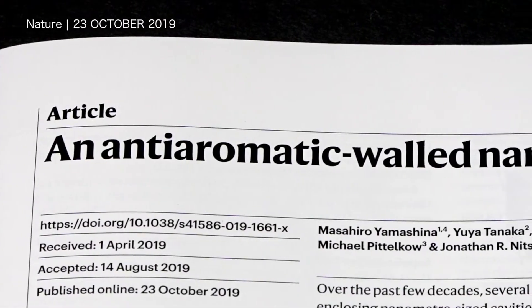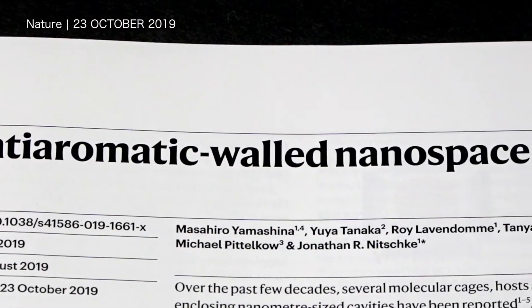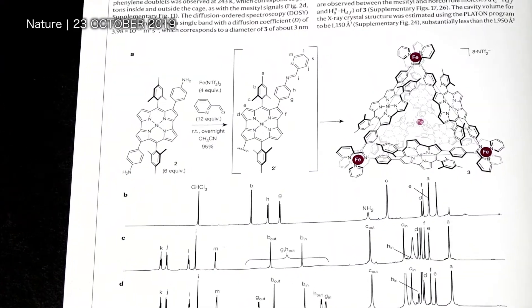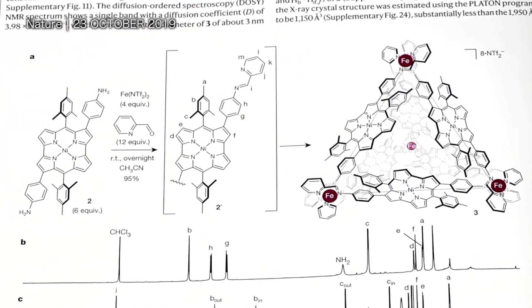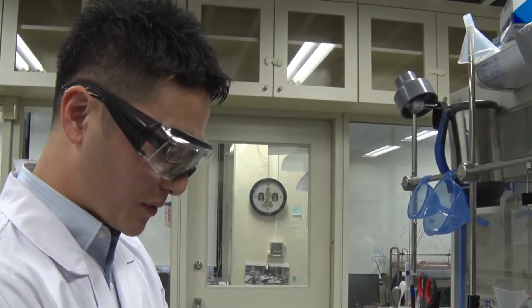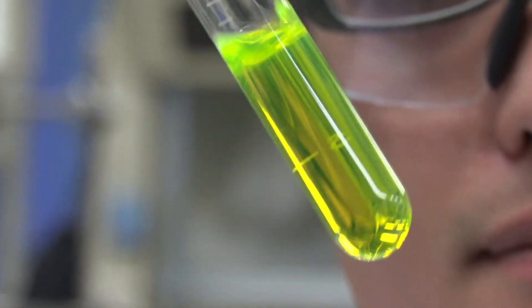Most recently, we developed an anti-aromatic supermolecule, a type of nanocage no one has ever built before. So far, many researchers have built supramolecules using aromatic walls. But it's much more difficult to do this using anti-aromatic walls, because they're so reactive and unstable.